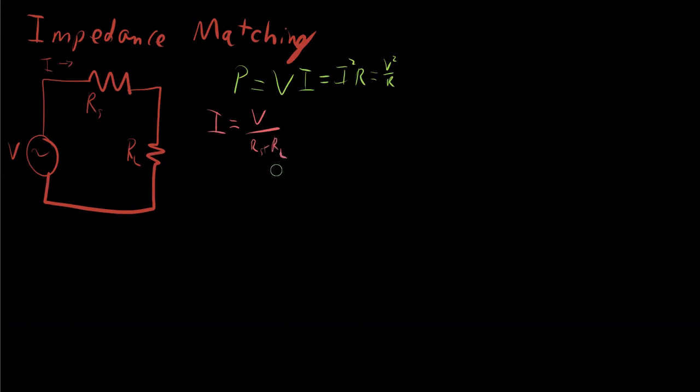And now we can take this I and put it into our power equation right here, I squared R, and let's see what that gets us. Now, we are of course solving this for the resistive load. So P of RL, or we'll just put that as PL, the power dissipated by the load.